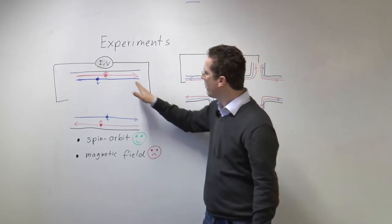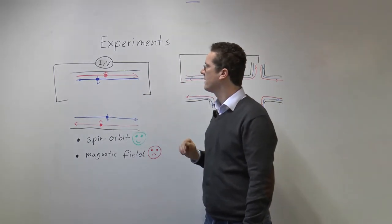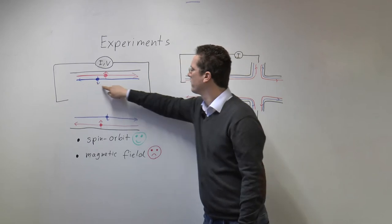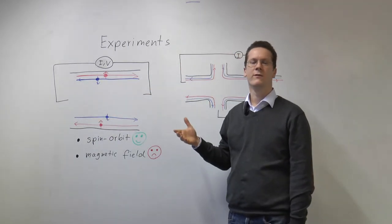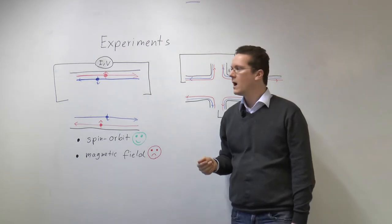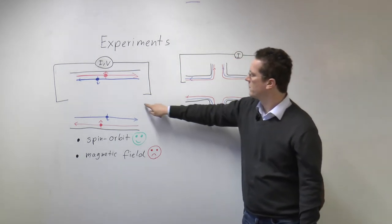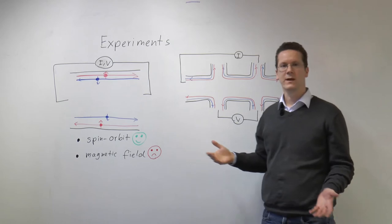And we can probe these edge states by passing a current through them. So if you apply a voltage here to these two sides of the sample then a current will flow through these edge states and this will give rise to a characteristic value of the resistance. However you do not need to restrict yourself to such a two-terminal setup. You can also go more crazy.